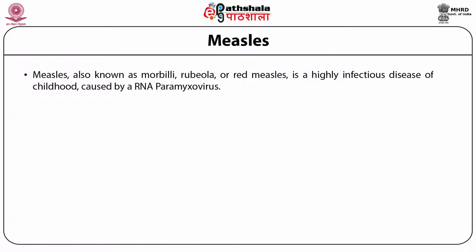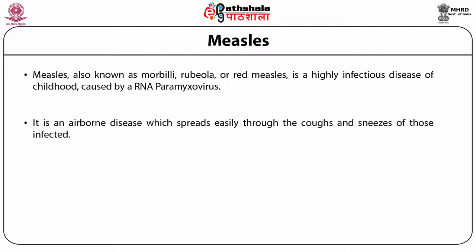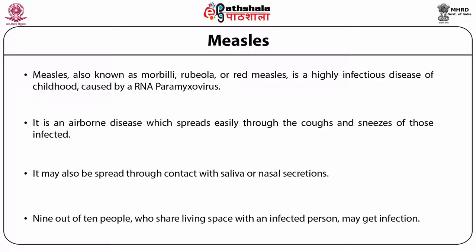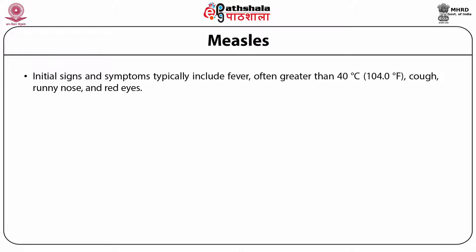Measles, also known as morbilli, rubella, or red measles, is a highly infectious disease of childhood caused by an RNA paramyxovirus. It is an airborne disease which spreads easily through the coughs and sneezes of those infected. It may also be spread through contact with saliva or nasal secretions. Nine out of 10 people who share living space with an infected person may get the infection. Initial signs and symptoms typically include fever often greater than 40°C (104°F), cough, runny nose, and red eyes.